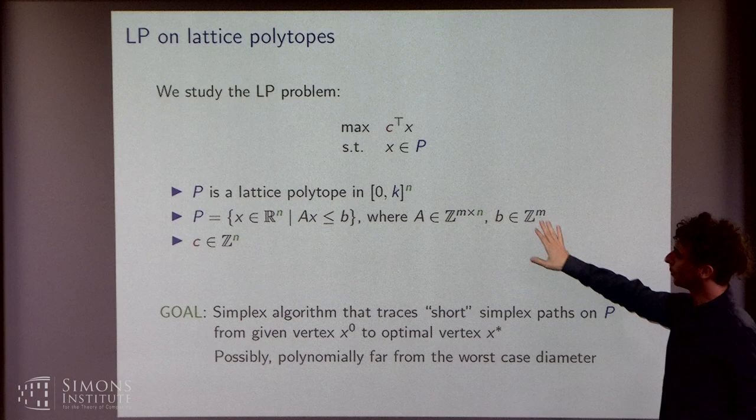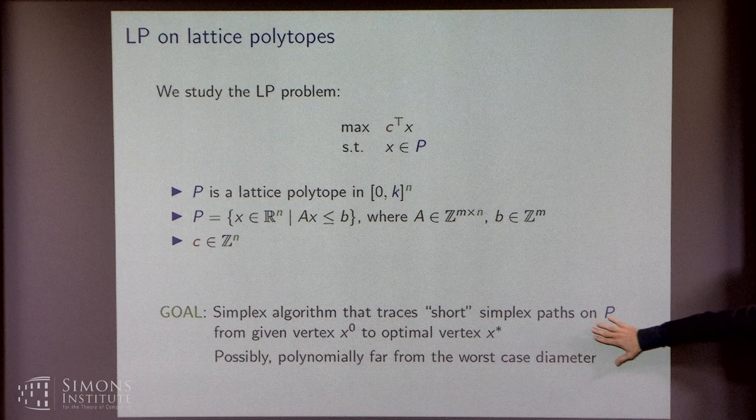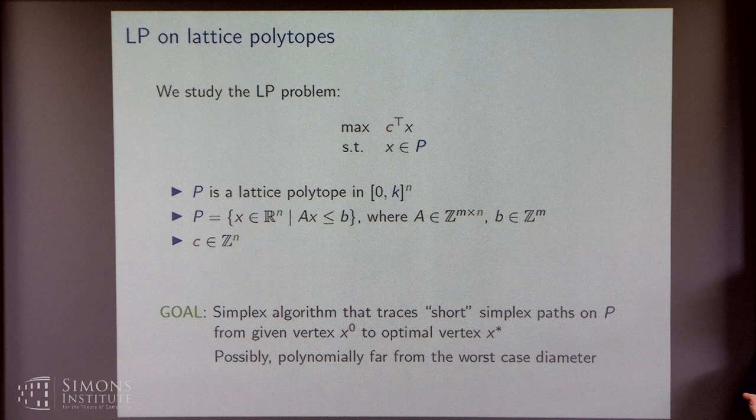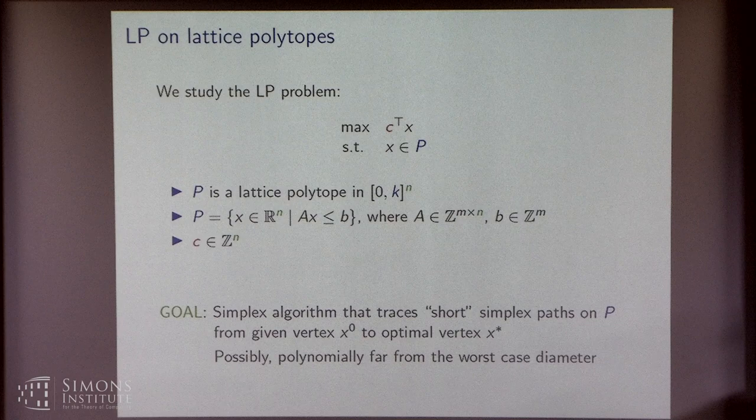Possibly, our target would be that we are polynomially far from the worst-case diameter. And we just saw that this diameter grows essentially linearly in n and k, so what we want as our first target is a simplex path length which is polynomial in n and k alone, in particular independent of all the data and independent on the number of inequalities. So let me just take a second to also give a little bit of an insight on how the proofs are different when you talk about diameter and when you talk about a simplex algorithm.